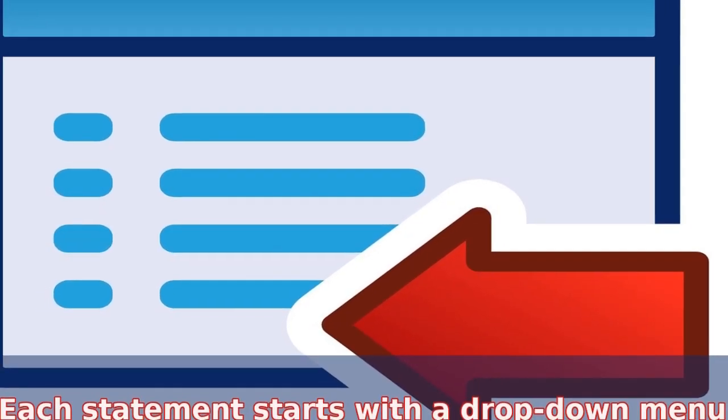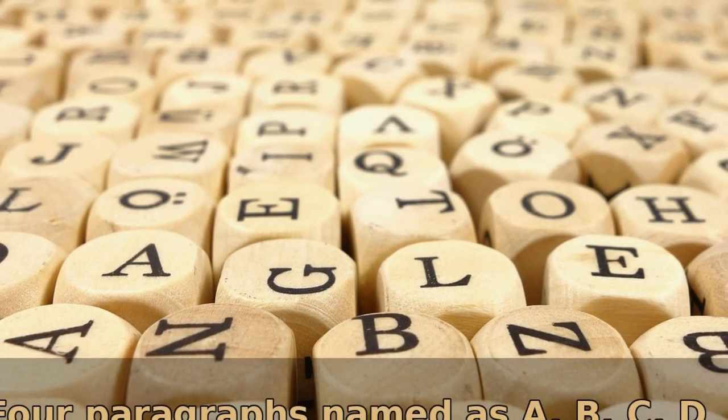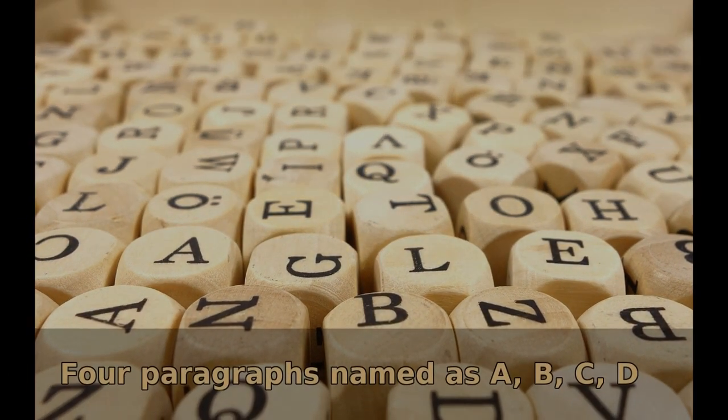Each statement starts with a drop down menu with five options named as A, B, C, D, and E. Now, as you know, there were four paragraphs named as A, B, C, and D on the left hand side. This means,